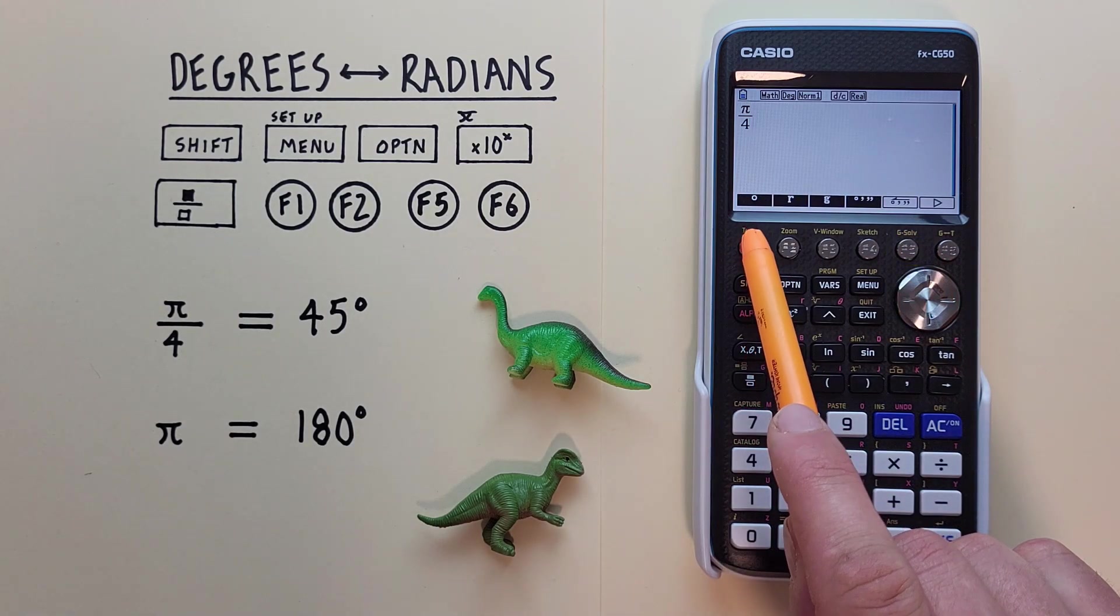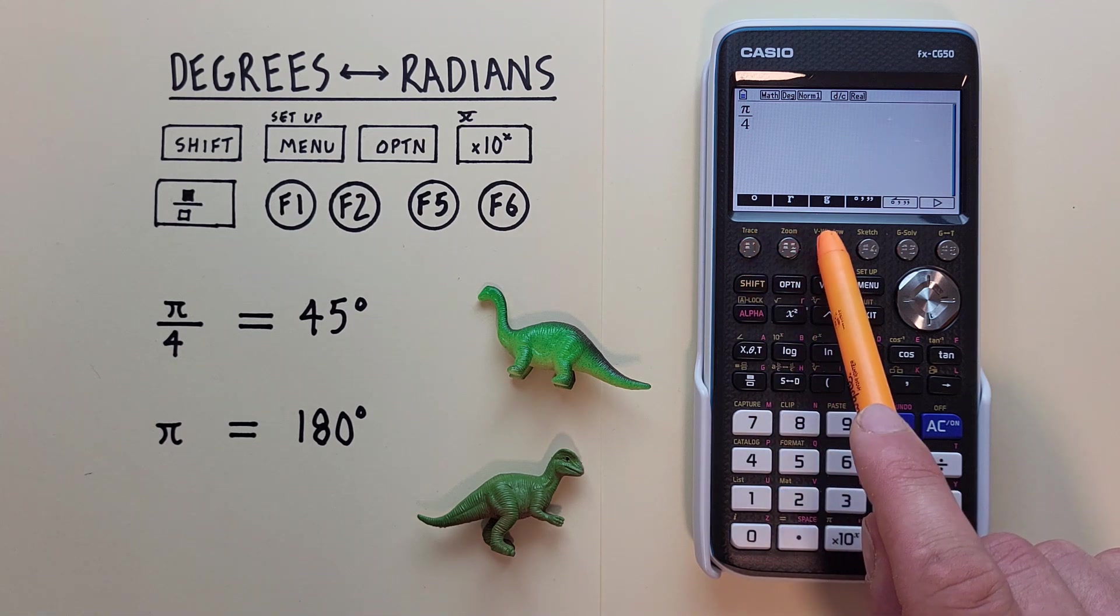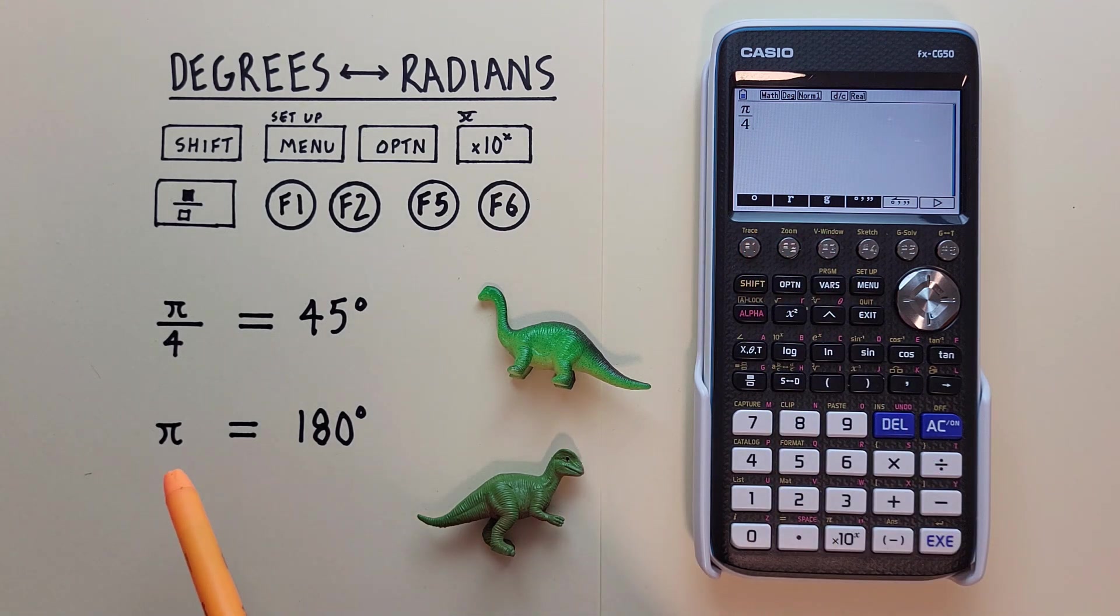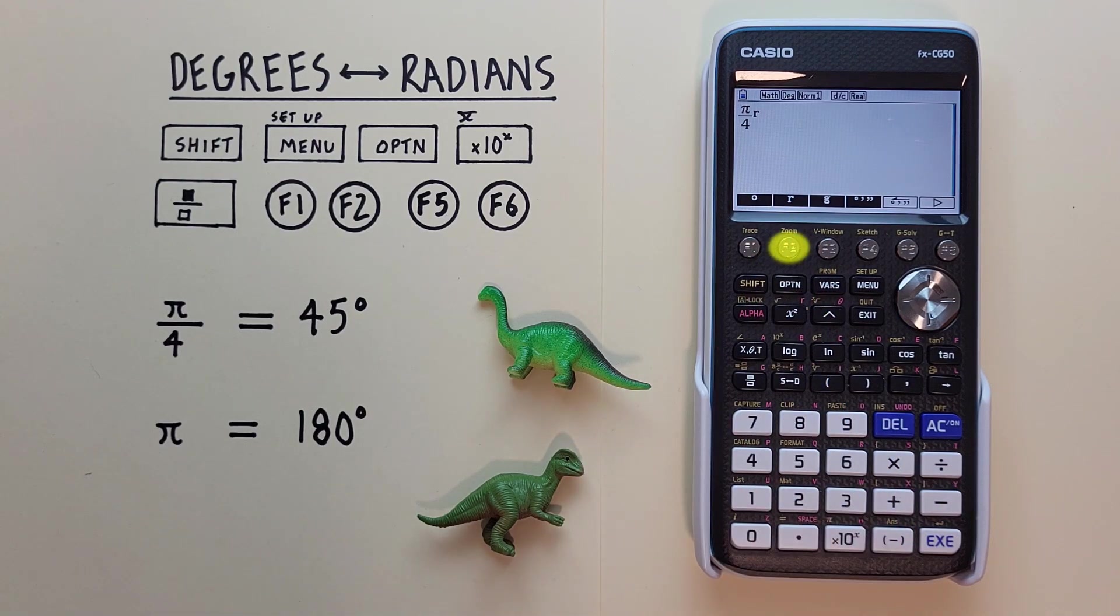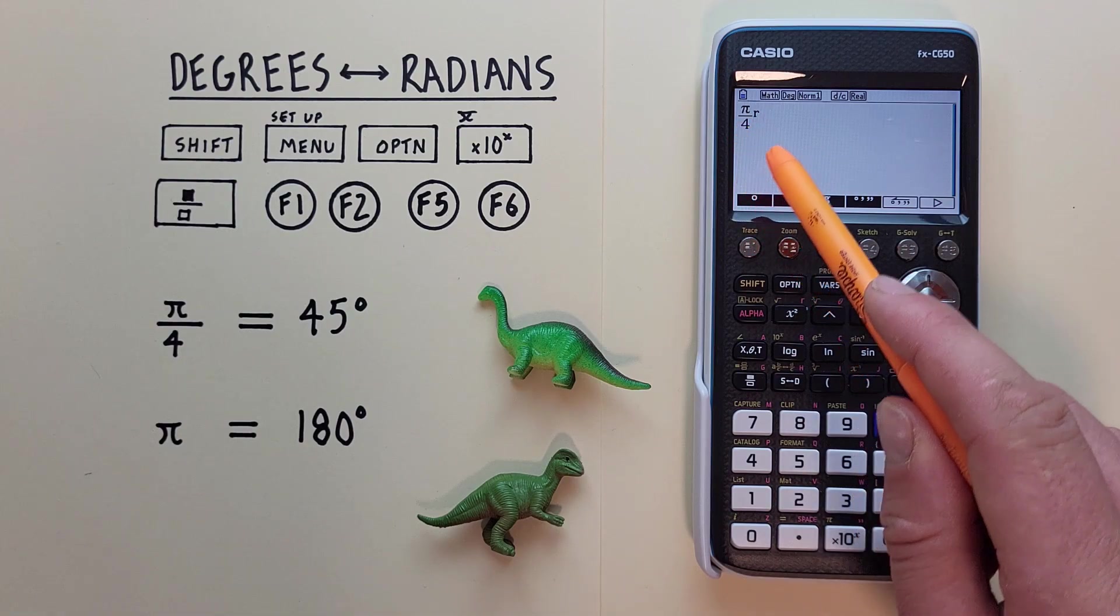And now we see a degree, a radian, or a gradient symbol here. Since these are radians, we choose F2 for the R. There we go. Now we have Pi over 4 radians.